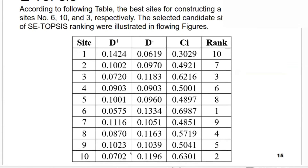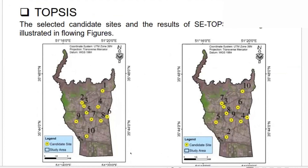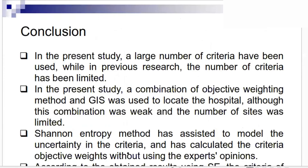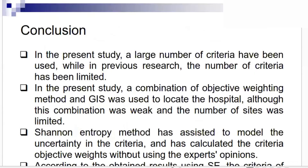We have considered 10 different candidate sites. This shows the result of the TOPSIS method for finding the candidate sites and the integration of Shannon theory and TOPSIS ranking.